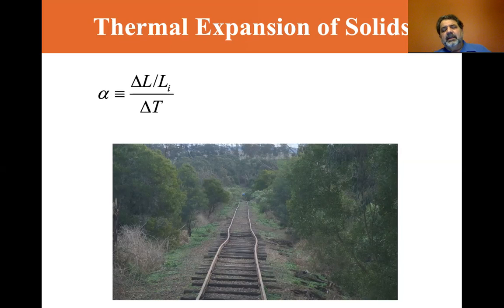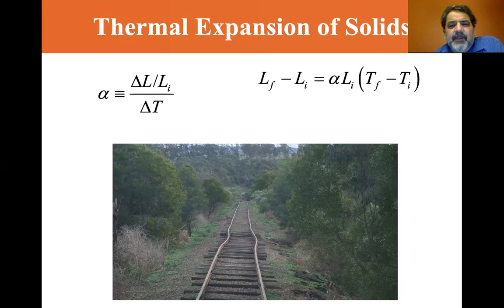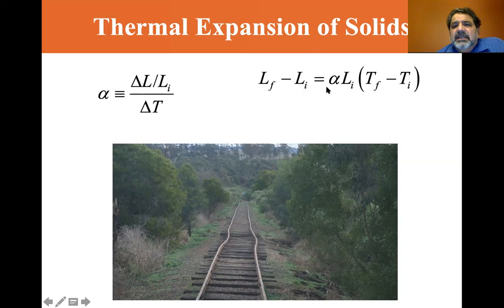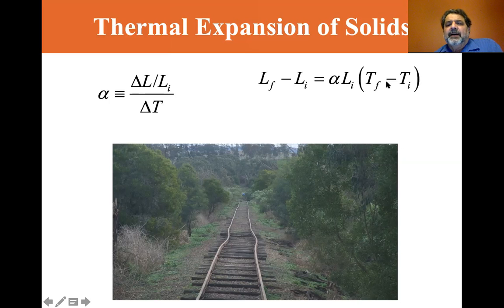The length changes by a coefficient alpha. If you take the change in length divided by the initial length divided by the temperature, you get alpha, the coefficient of thermal expansion. So the length final minus the length initial, which is the delta L, is equal to the coefficient of linear expansion times the initial length times the change in temperature. And we can mark that where we have a final minus initial, you can make it a delta. So delta L equals alpha L initial delta T.